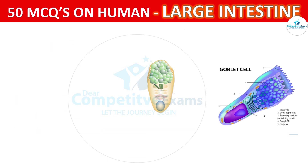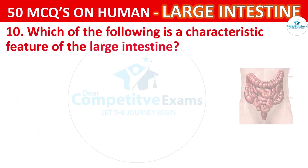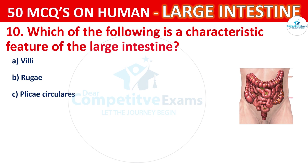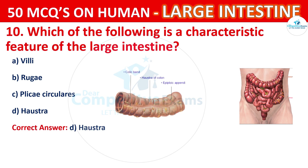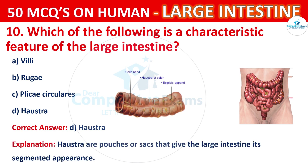Question number 10. Which of the following is a characteristic feature of the large intestine? Your options are: Villi, Rugae, Plicae circulares, or Haustra. The correct answer is D, that is Haustra. The haustra are pouches or sacs that give the large intestine its segmented appearance.